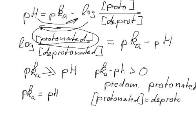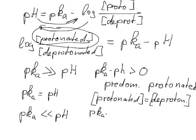And if the pKa is much smaller, by one unit say, than the pH, we know that pKa minus pH is smaller than zero. So the deprotonated form is dominant and we have predominantly the deprotonated form.